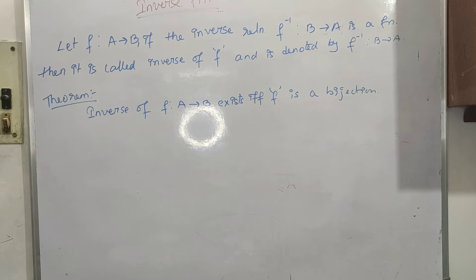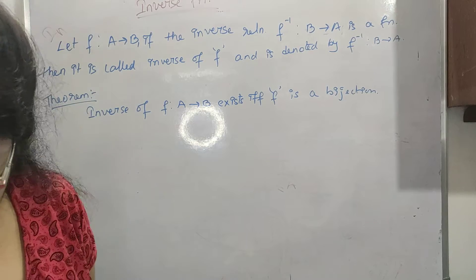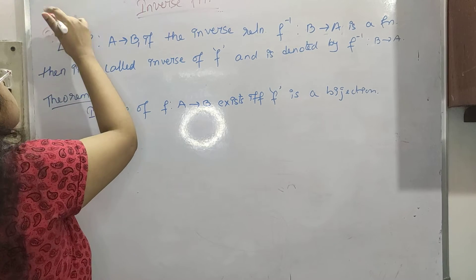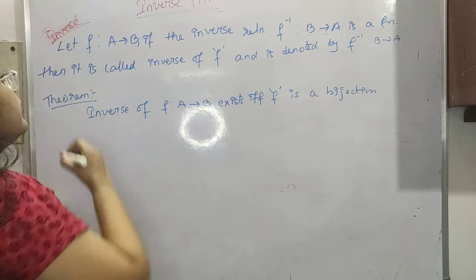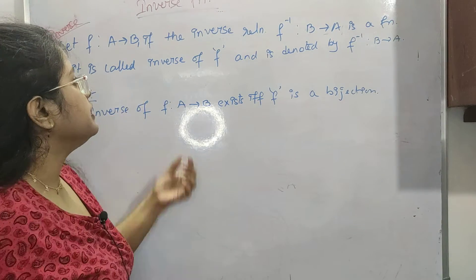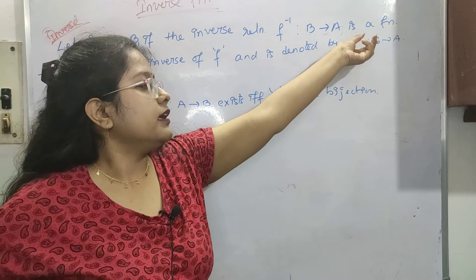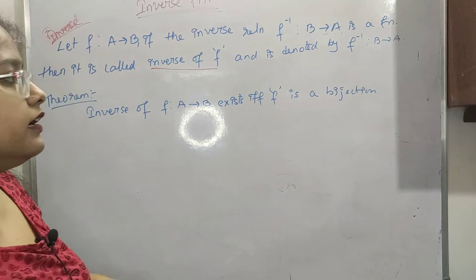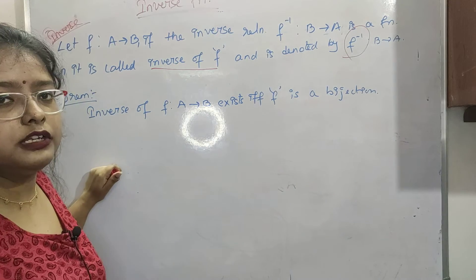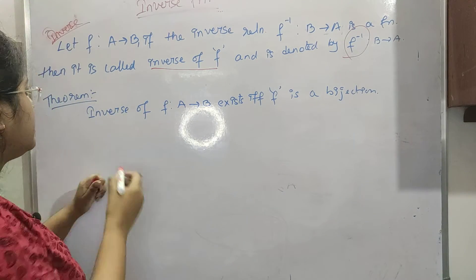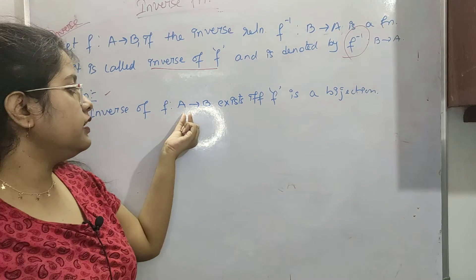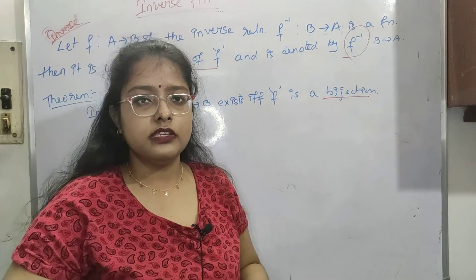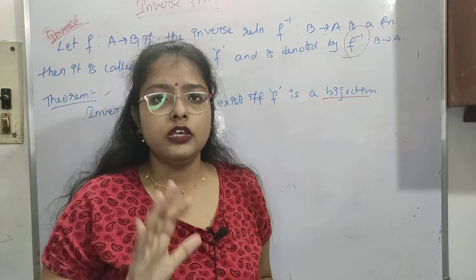Now let's see inverse functions. Let F: A → B. If the inverse relation F⁻¹: B → A is also a function, then it is called the inverse of F, denoted F⁻¹. The theorem states: the inverse of a function F: A → B exists if and only if F is a bijection — i.e., both one-to-one and onto. We've now seen the concept; next we will look at gate questions. Bye, see you in the next video.